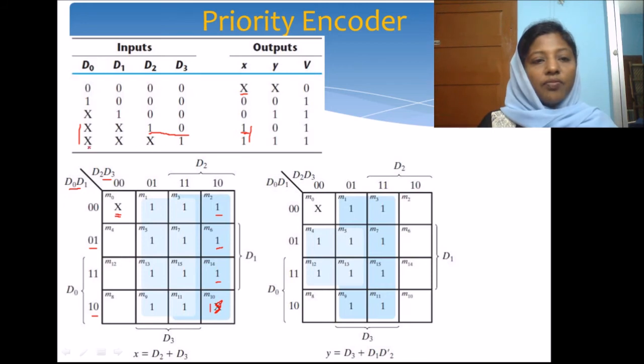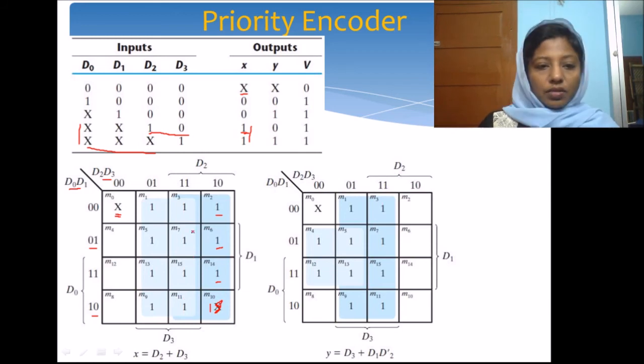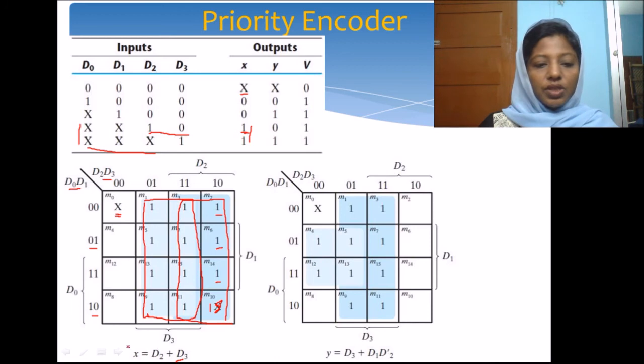Similarly, we have to have the combination. We will have 8 combinations for d3 to be 1, which is d3. These 2 columns correspond to d3. And these are the 8 combinations that we will get for d3 to be 1. We have marked all these columns, these cells, to be 1. Now we can simplify. We can combine these 8 ones together. This is 1 block which corresponds to d3. And we can combine these 2 blocks together and we can get d2. This is the expression for x.